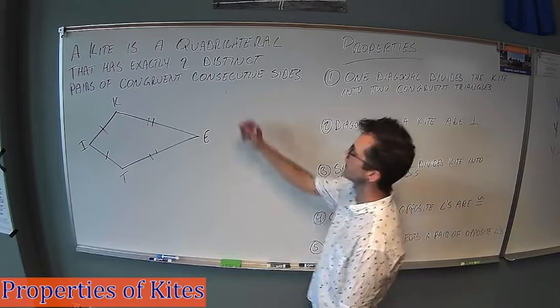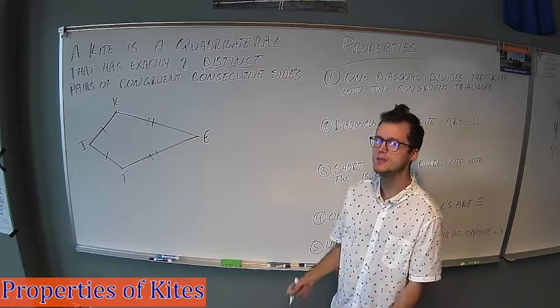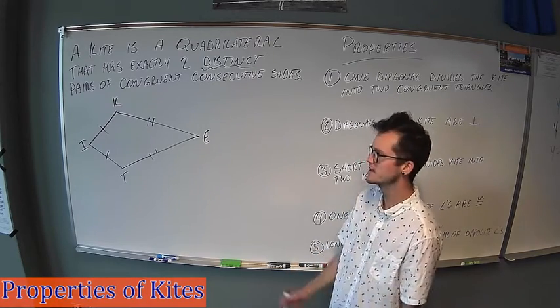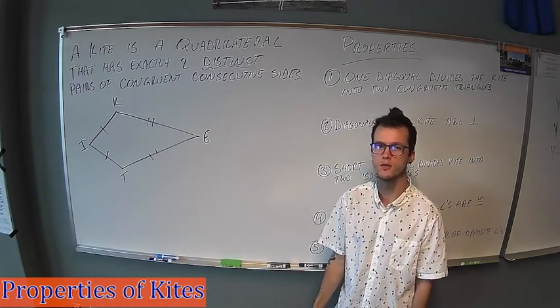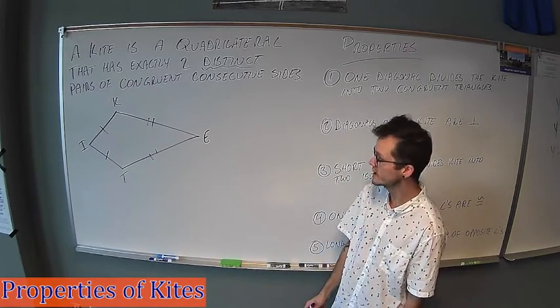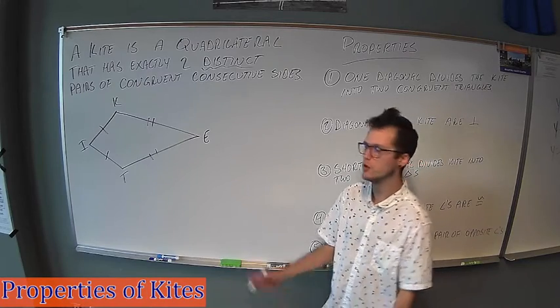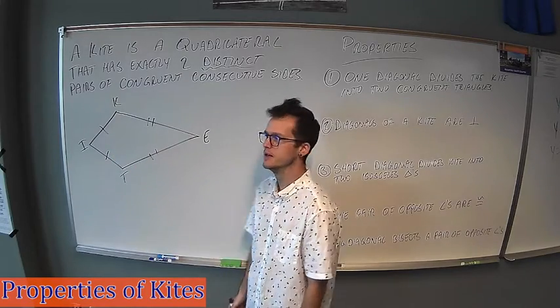One more thing I want to point out is this word distinct. The reason why that's important is because we need two distinct pairs of congruent consecutive sides. If these were all the same length, technically we'd have two pairs of corresponding sides that are consecutive and congruent, but they're not two distinct ones. So with a kite, there's always two short sides, two long sides.